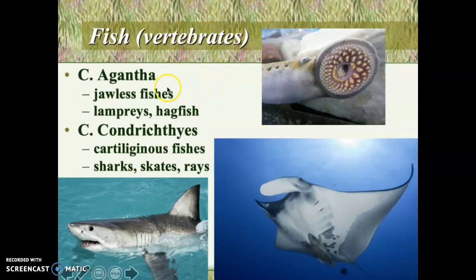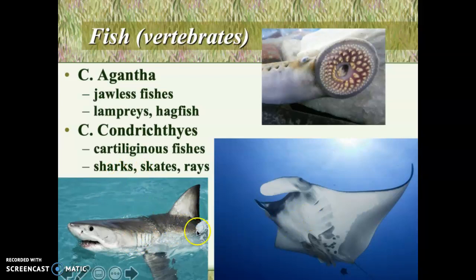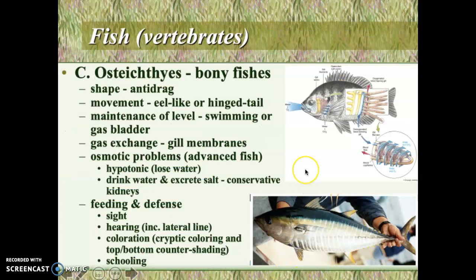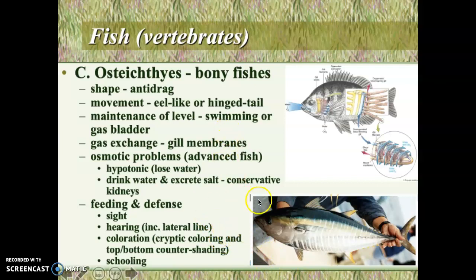Within the vertebrates we have the fish, which are several different groups within Phylum Chordata. The Agnatha in the upper right is a jawless fish called a lamprey. The cartilaginous fish, which have skeletons but not bony skeletons, include the sharks, skates, and rays. Then we have our bony fish — Class Osteichthyes — which are the fish we tend to consume. Probably one of the most interesting things about fish is how efficient their gills are at extracting oxygen from the water.